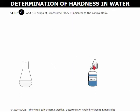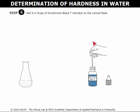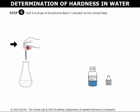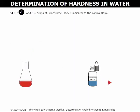Click here to open the lid of Eriochrome Black T indicator. Click on the dropper to collect the indicator. Click here to add five to six drops into the conical flask. Close the lid.